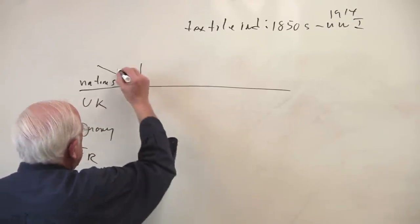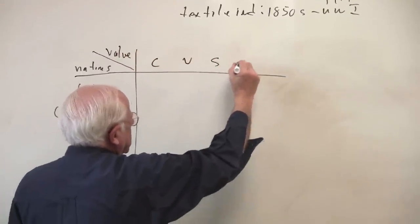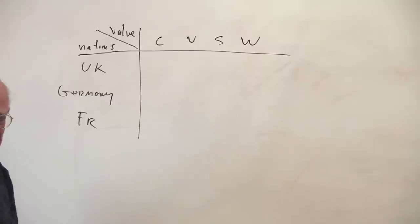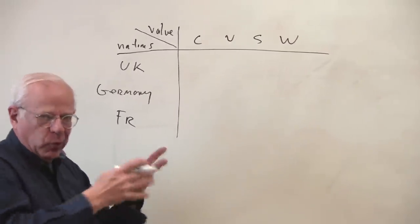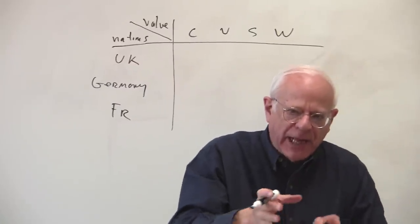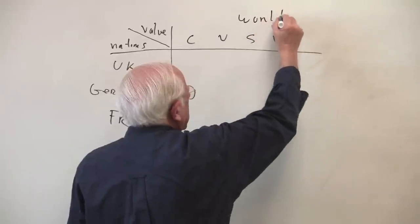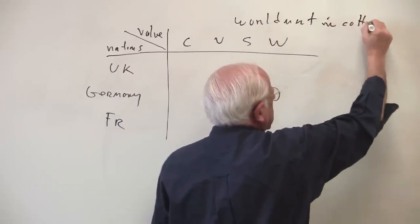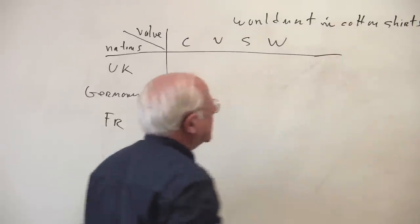And I want to talk about over here the value flows, the C, the V, the S, the W. And what I'm going to assume here is that we have a world market. So we have been talking before about national market. Now I want to extend this to a world market. World market in what? In cotton cloth, in cotton shirts.